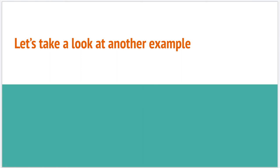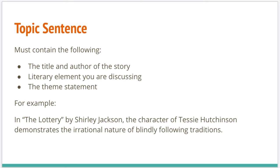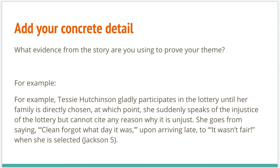Let's look at a second example — I'm going to stick with characterization so you can see how these two examples could potentially form a two-chunk paragraph. Topic sentence, title and author, literary element, theme statement: 'In The Lottery by Shirley Jackson, the character of Tessie Hutchinson demonstrates the irrational nature of blindly following traditions.' For the evidence: Tessie Hutchinson gladly participates in the lottery until her family is directly chosen, at which point she suddenly speaks of the injustice but cannot cite any reason why it is unjust. She goes from saying 'Clean forgot what day it was' upon arriving late to 'It wasn't fair' when she is selected.